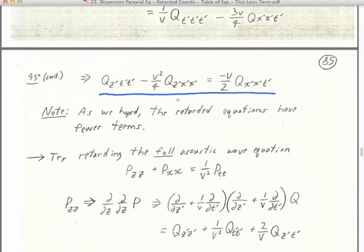A lot of what we'll do involves moving these equations around — putting everything on the left side equal to zero, which changes signs, or solving for one of the terms. It's very tricky to keep track of the negative signs as you do all that. As hoped, the retarded equations for 5, 15, and 45 degrees all have fewer terms and are going to be easier to finite difference and find a useful downward continuation method, up to fairly high dips.